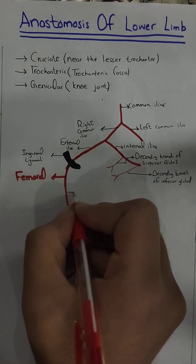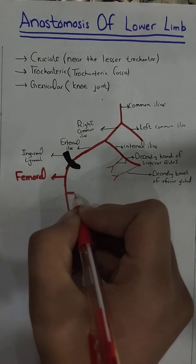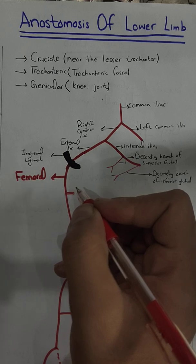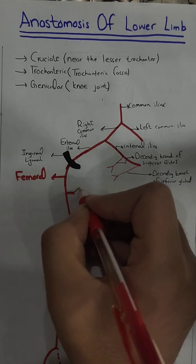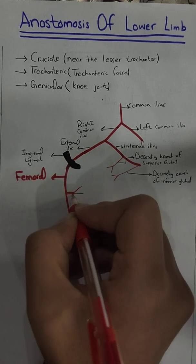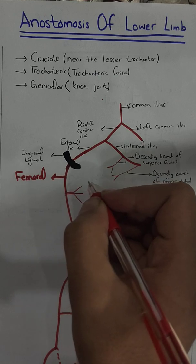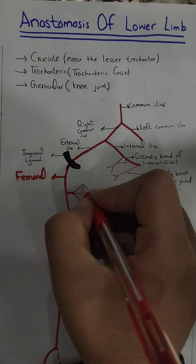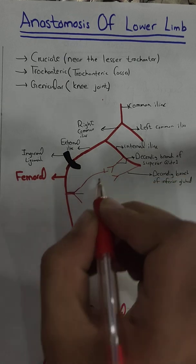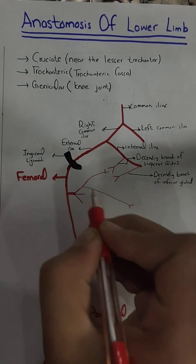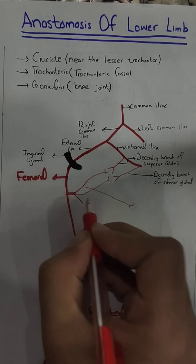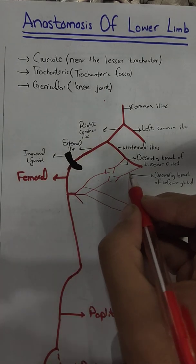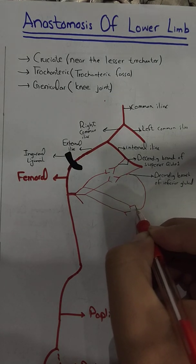From the femoral artery arises the profunda femoris artery. The profunda femoris artery divides into three branches: the lateral circumflex, the medial circumflex, and the perforating branches. The lateral circumflex and medial circumflex each divide into an ascending branch and a transverse branch. The descending branch of the lateral circumflex will also give a branch here which will anastomose with the others.